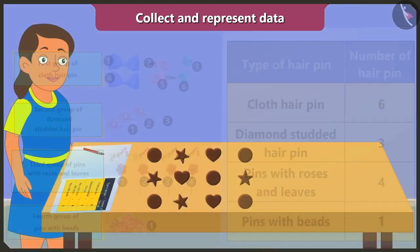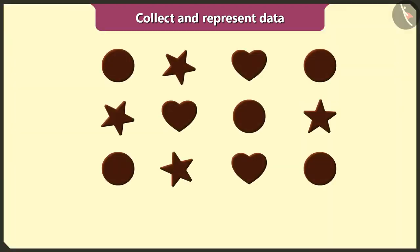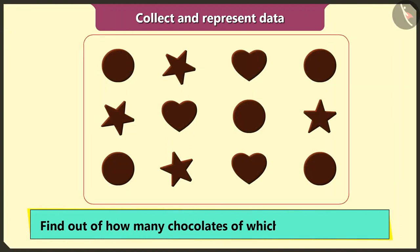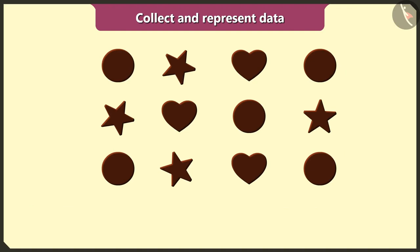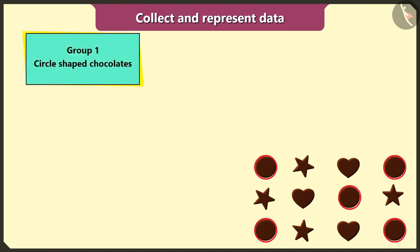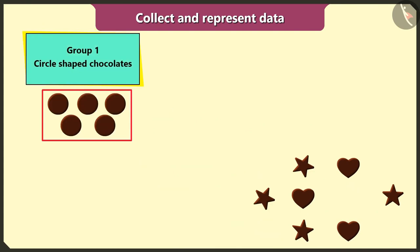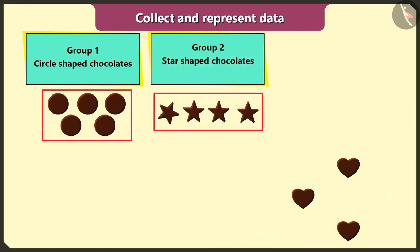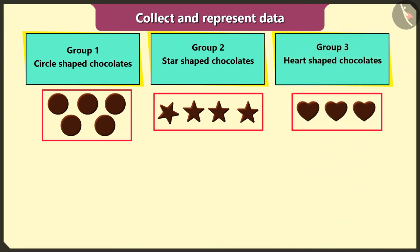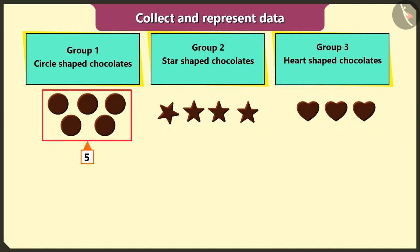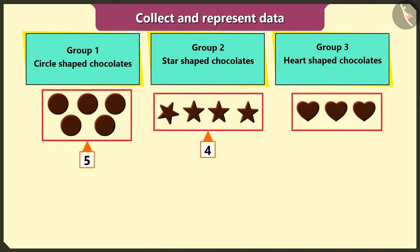Wow, I am having fun! Now let me find out how many chocolates of which shapes I have. So first of all, I will group chocolates based on their shapes. First group of circle shaped chocolates. Second group of star shaped chocolates. Now I will count the chocolates in each group. In the first group, five circle shaped chocolates. In the second group, four star shaped chocolates. And in the third group, three heart shaped chocolates.